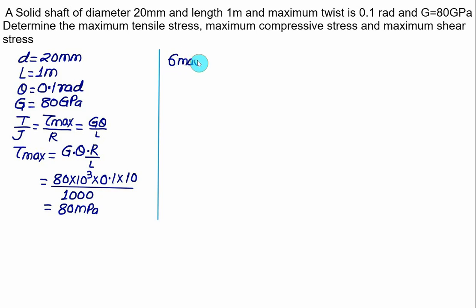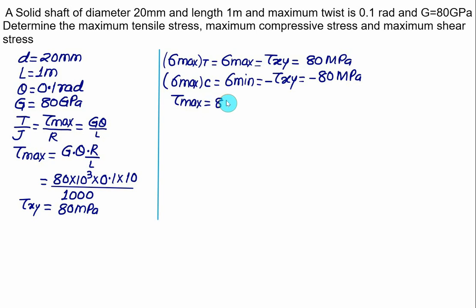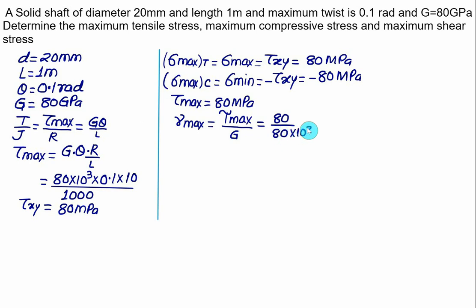So the maximum tensile stress σ_max = τ_max = τ_xy = 80 MPa, and the maximum compressive stress σ_min = −τ_max = −80 MPa. If asked for the maximum shear strain: γ_max = τ_max / G = 80 / (80 × 10³) = 10⁻³.